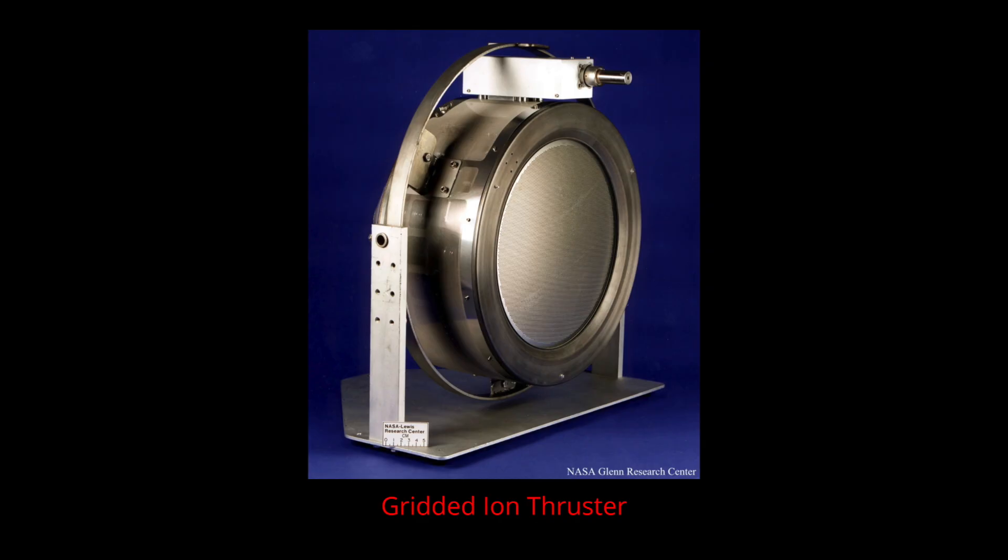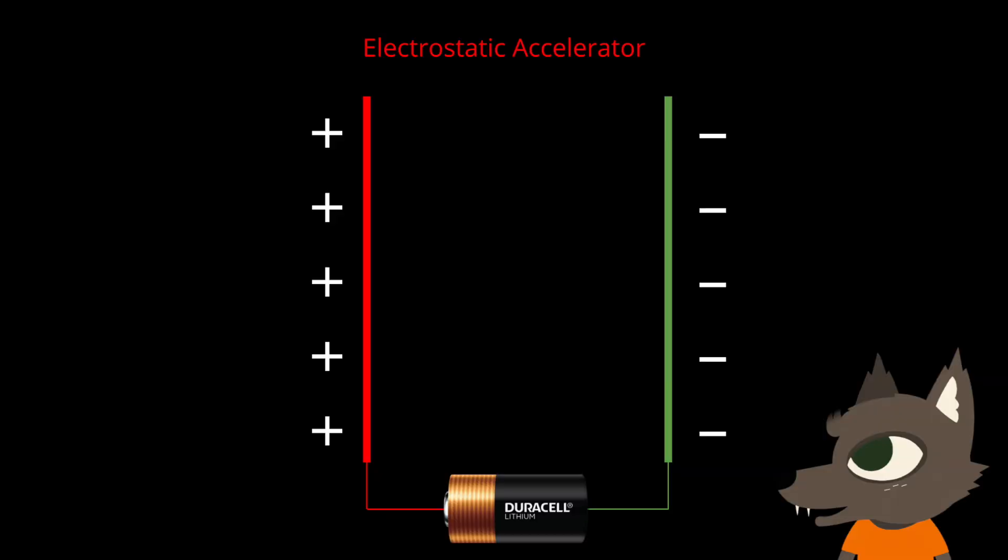This video will focus on one type of electric thruster called a gridded ion thruster, but there are a wide variety of designs. Gridded ion thrusters are built around the simplest form of particle accelerator, called an electrostatic accelerator, which consists of two flat plates with a high voltage potential between them. This potential creates an electric field between the plates.